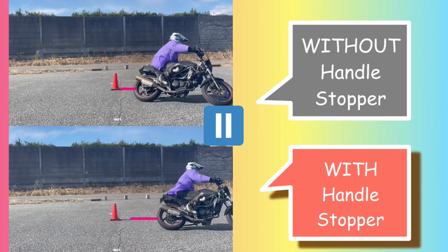But at this point, you can see he is exiting the section faster with it. Maybe with his riding style, the handle stopper could fit better.